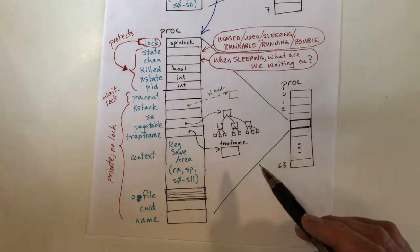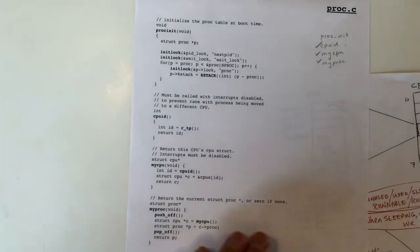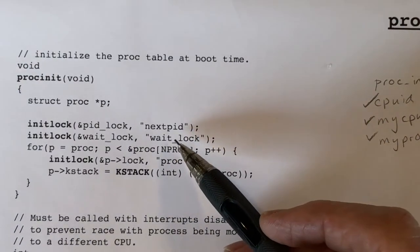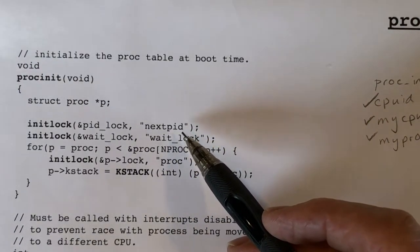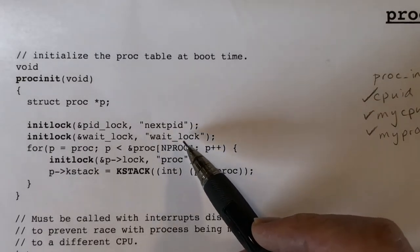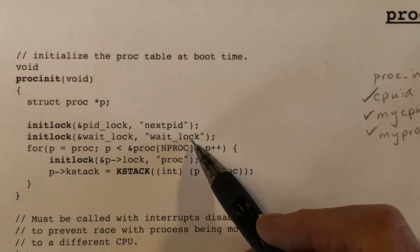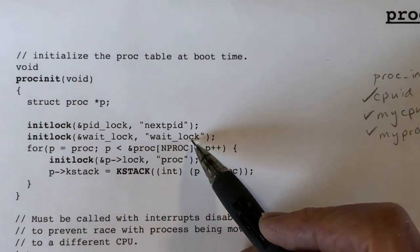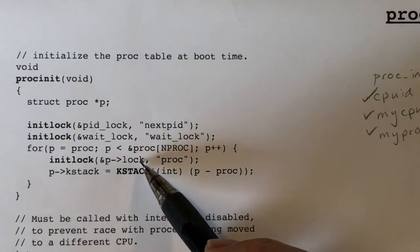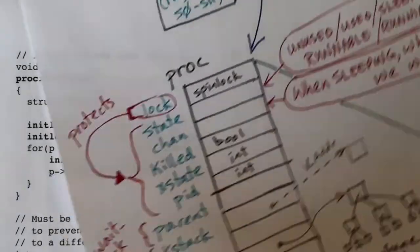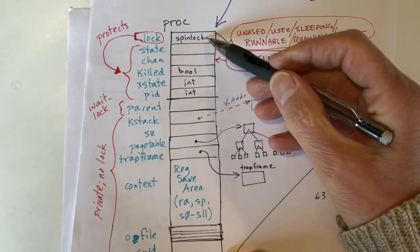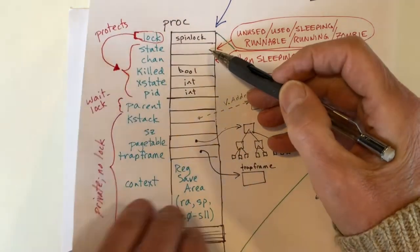I want to talk about the function proc_init, which initializes the proc array. This is called once by core zero only during the initialization of the kernel. It initializes the lock for the process ID that we just saw, and it also initializes another lock called wait_lock. Then it goes through the proc array, and for each element, it initializes the spin lock and also initializes the kstack field.